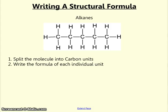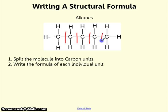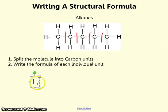Let's start with alkanes. The first thing we do when we have a displayed formula is to split up the long chain into individual carbon units. Then we can write down the formula of each carbon unit. On carbon number one we have CH3.